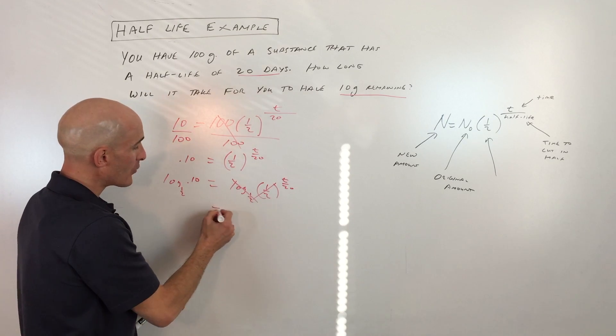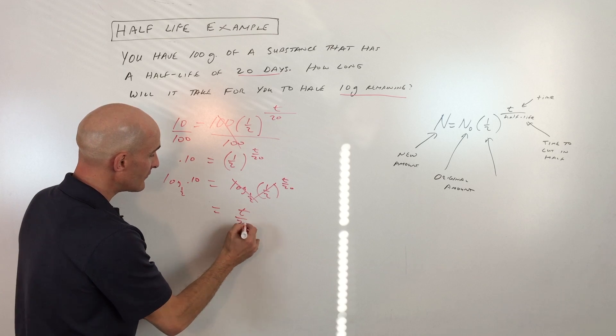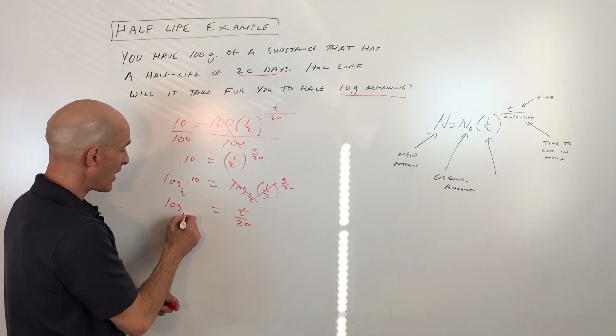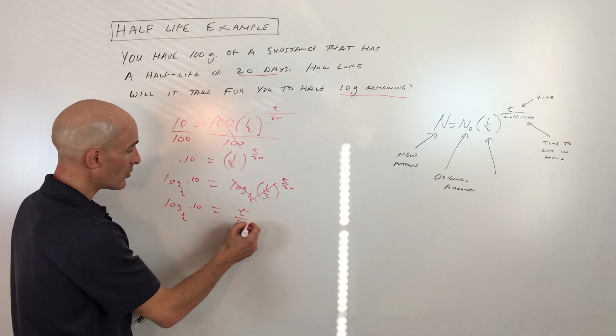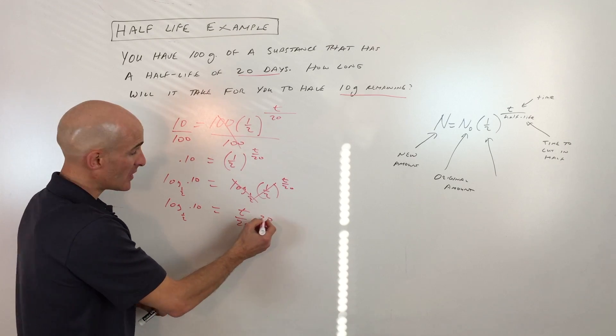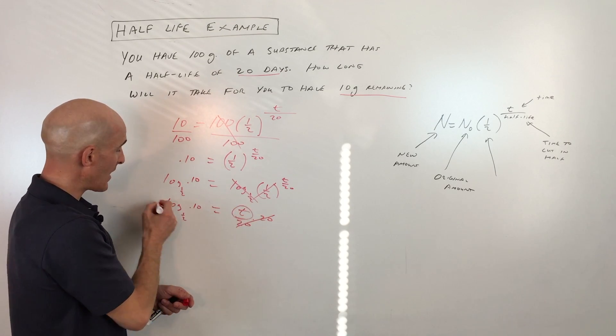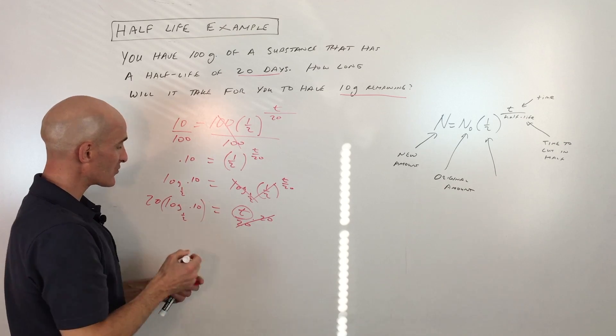These are inverses. They cancel one another out or undo one another. And so you're left with t divided by 20 equals log base one-half of 0.10. We're just going to do the opposite of dividing by 20, multiply both sides by 20 to get t by itself. Let's do the same thing to the other side.